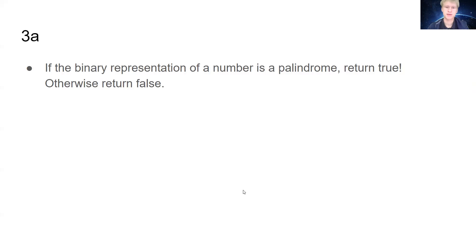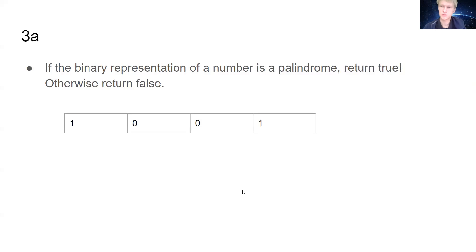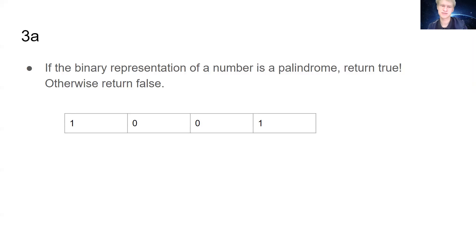So what do we mean by this? Consider the following number — this happens to represent nine. As we can see, it's a palindrome because if I were to read it from left to right or right to left, it is the same regardless. Left to right is 1001, and right to left is also 1001. It's kind of like the classic palindrome problem, but on a binary representation.